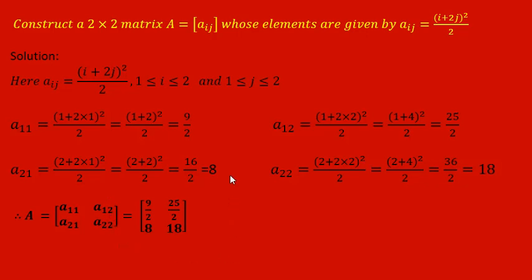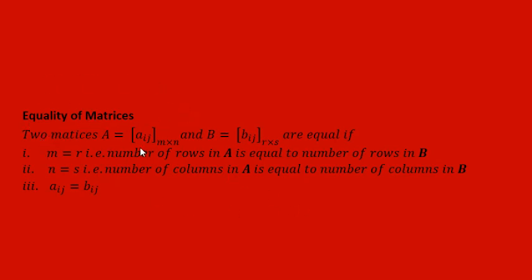Equality of matrices: if two matrices are given, how can we say they are equal? Two matrices A (which is Aij of order M into N) and B (which is Bij of order R into S) are equal when M equals R — that is, number of rows in the first matrix equals number of rows in the second — and N equals S, meaning number of columns must also be equal. Thirdly, Aij must equal Bij for all i and j, meaning A11 equals B11, A12 equals B12, and so on.